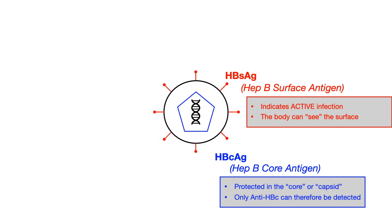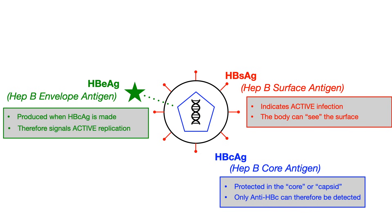Lastly, we have the hep B envelope antigen. In the production of the core antigen, the virus also kind of spits out this envelope antigen. So as the virus makes the core antigen, it spits out — or poops out — a little bit of envelope antigen. And it's this envelope antigen that signals active replication. If you see the envelope antigen, this is not part of the mature virus, and therefore this signals active replication. And when something's actively replicating, it means that there's high transmissibility.